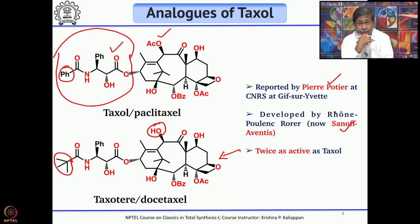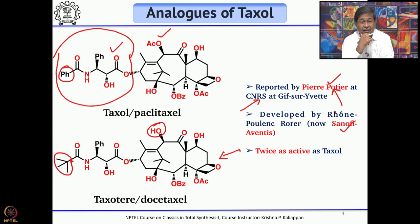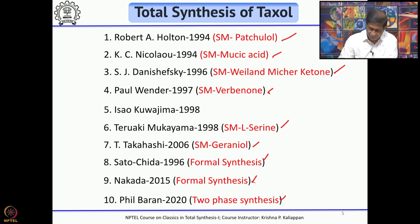Docetaxel is currently being used for the treatment of ovarian and breast cancer, and CNRS and Pierre Potier received a great deal of royalty from Sanofi-Aventis for this work. Several groups have completed total synthesis or formal synthesis of Taxol starting from different starting materials.